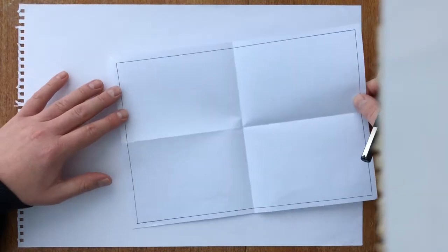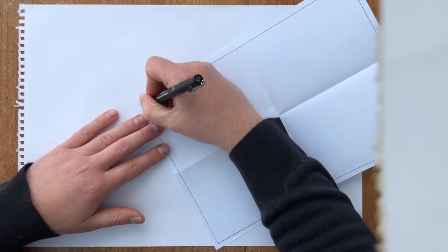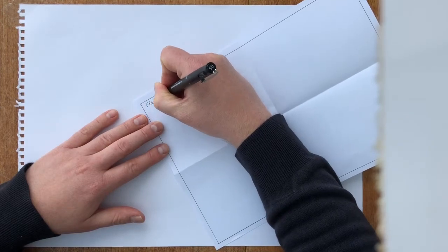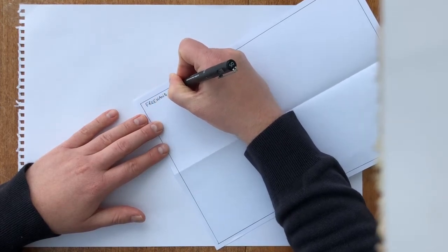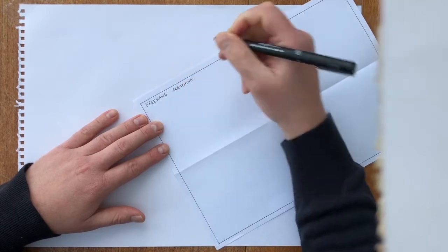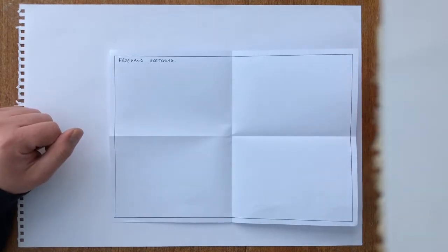The first skill we're going to look at is something called freehand sketching. I'm just going to add a title here. Now freehand sketching is a skill where we learn to draw straight lines without the use of a straight edge, for example something like a ruler. For the skill we want to remember four techniques.